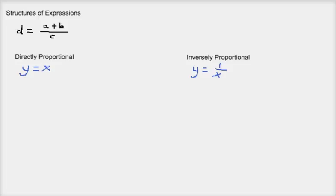So let's apply this to this formula, this equation if you will. So d equals a plus b over c. First of all, let's do directly proportional and find which ones are directly proportional. If we had to rewrite this with no fractions, we would multiply both sides by c. So we would get cd equals a plus b.